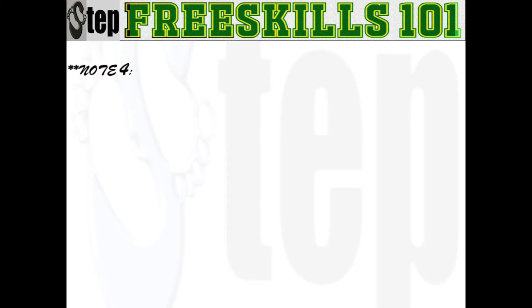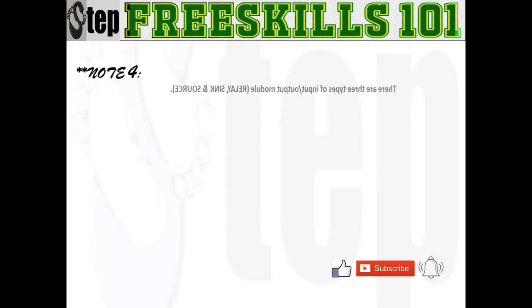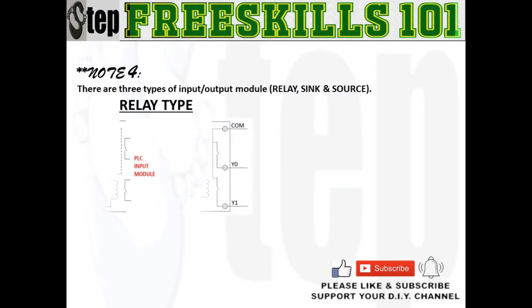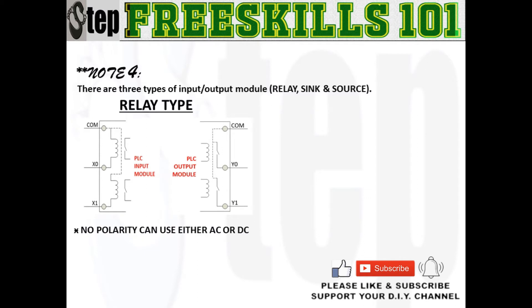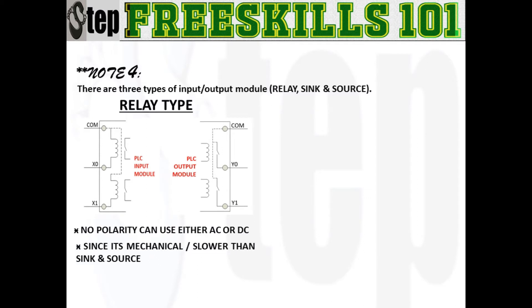There are three types of input and output modules and they are relay type, sink, and source. Relay type has no polarity since it is a mechanical type. You can wire either an AC or DC circuit, but like any electromechanical type such as solenoid relays, it is slower and prone to mechanical drift.